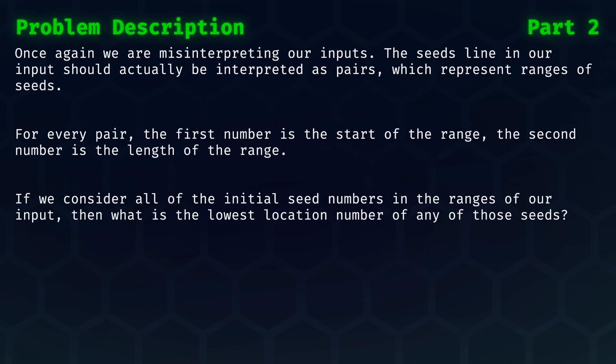In typical Advent of Code fashion, we are of course misinterpreting our inputs. The seeds line in our input should actually be interpreted as pairs, which represent ranges of seeds. For every pair, the first number is the start of the range, the second number is the length of the range. If we consider all of the initial seed numbers in the ranges of our input, then what is the lowest location number of any of those seeds?